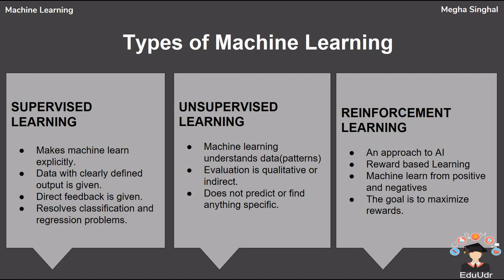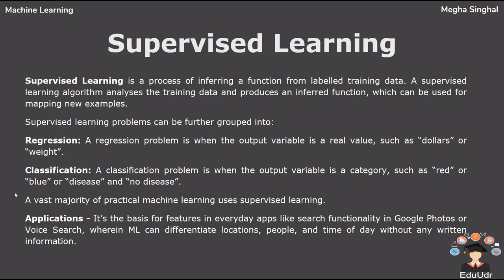Reinforcement learning is an area of machine learning concerned with how software agents ought to take actions in an environment in order to maximize the notion of cumulative reward. Supervised learning is the type of learning where you have labeled data. A training pair — consisting of your input vector and your target vector — is passed into the machine. If your target vector matches with the output variable, it means there is no error; otherwise there is an error.